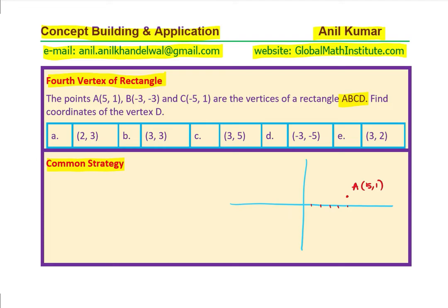B is (-3,-3), that becomes B(-3,-3). C is (-5,1), so it is (-5,1), C.